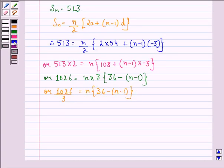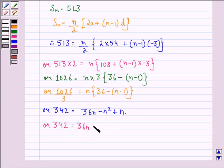Or 342 equals 36N minus N square plus N, or we can say 37N minus N square.